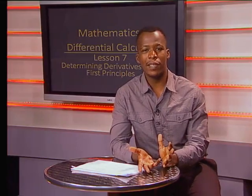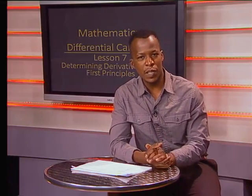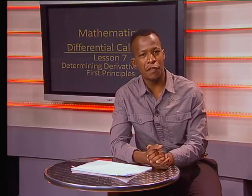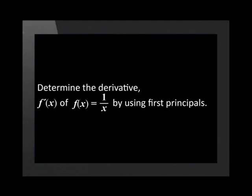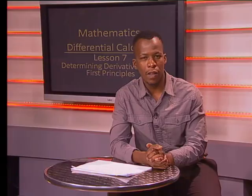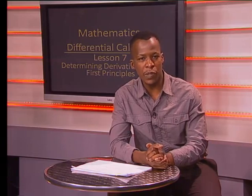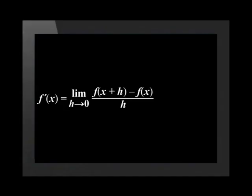That wasn't too bad. Why don't we challenge ourselves with a function that has a fraction, like a hyperbola? Let's take a look. Determine the derivative f dash of x of f of x equal to 1 divided by x by using first principles. We will start by using the first principle formula, which reads f dash of x is equal to the limit as h tends to 0 of f of x plus h minus f of x divided by h.